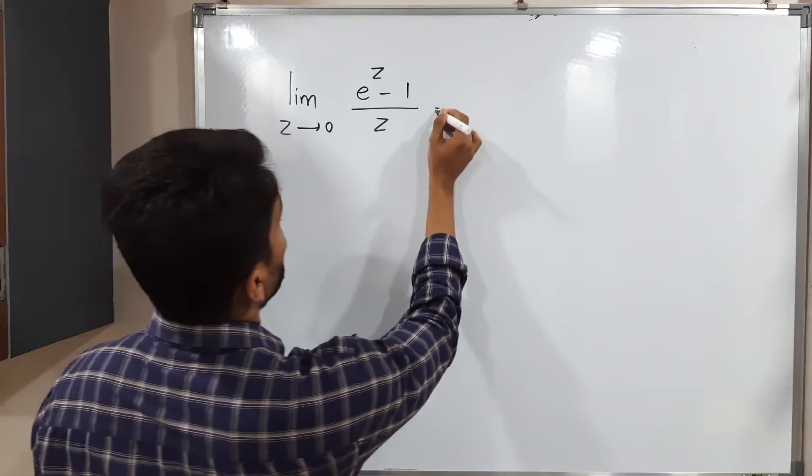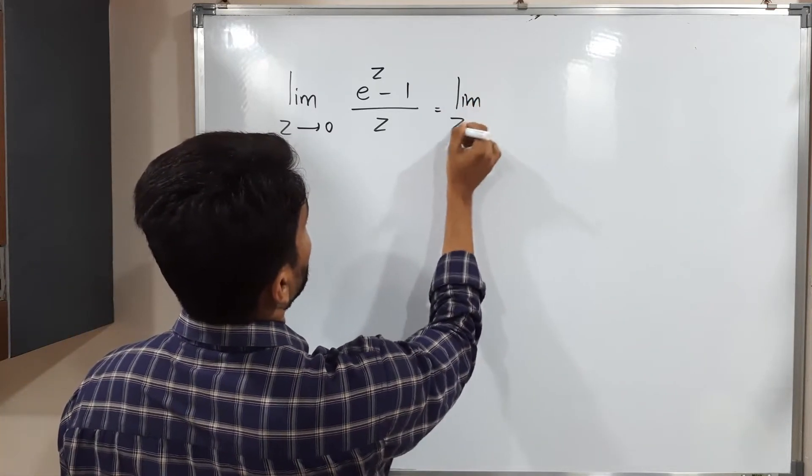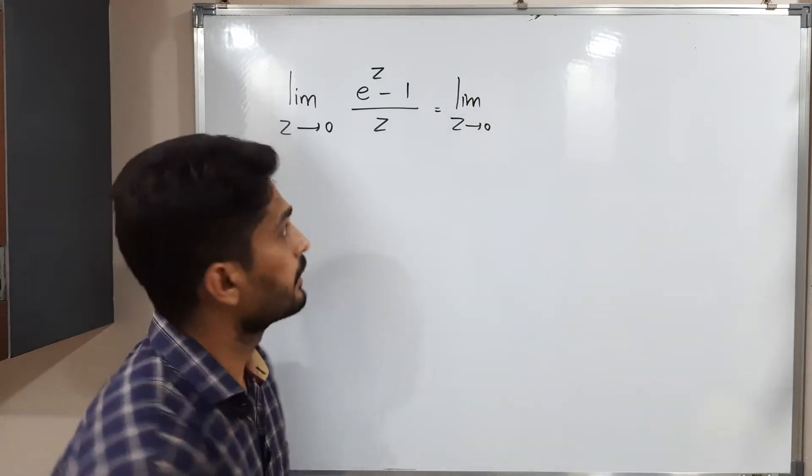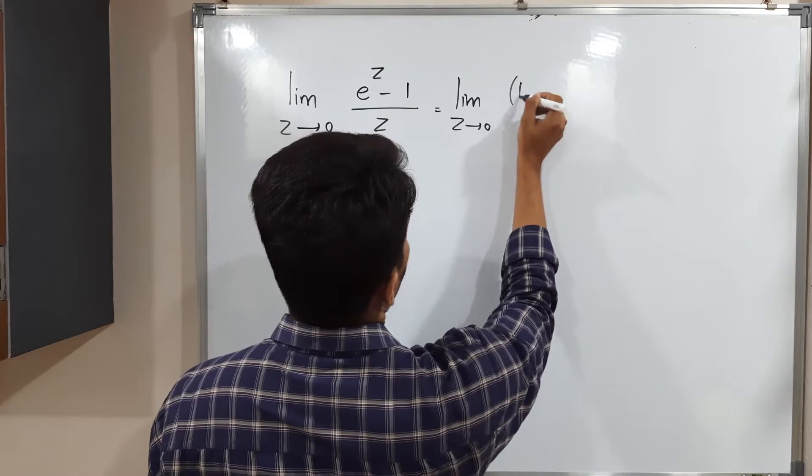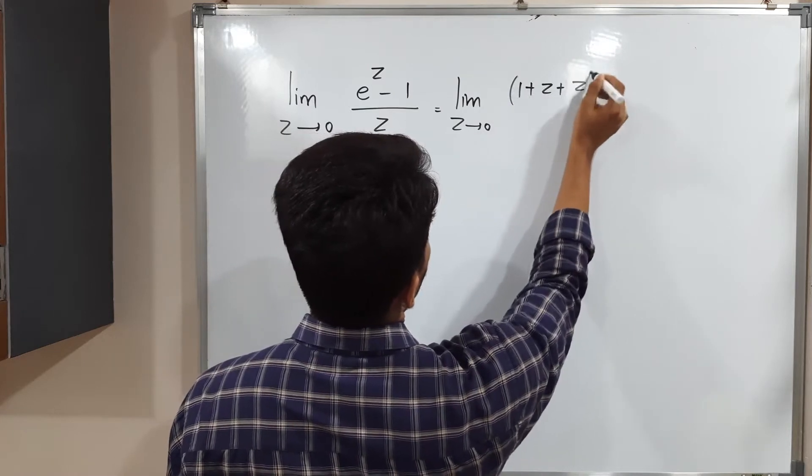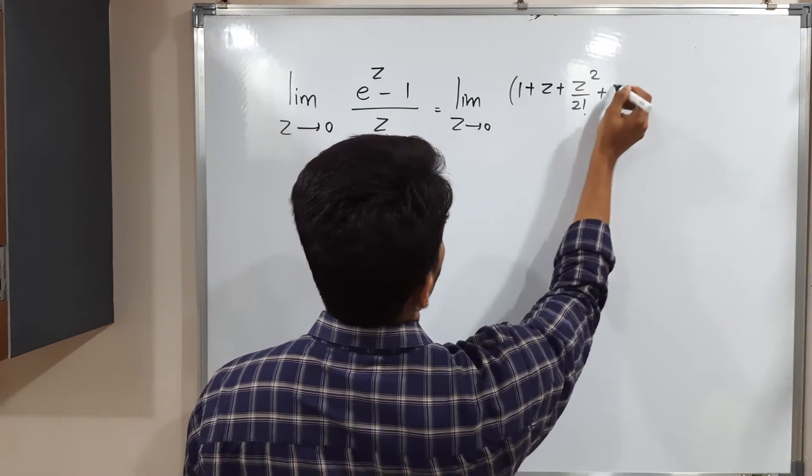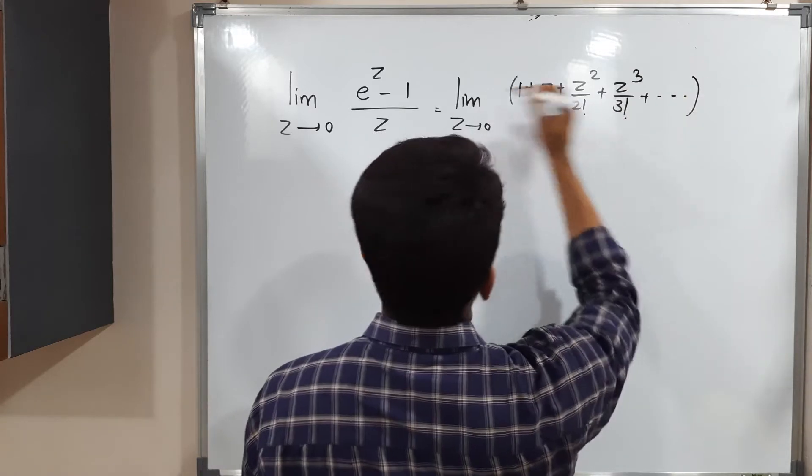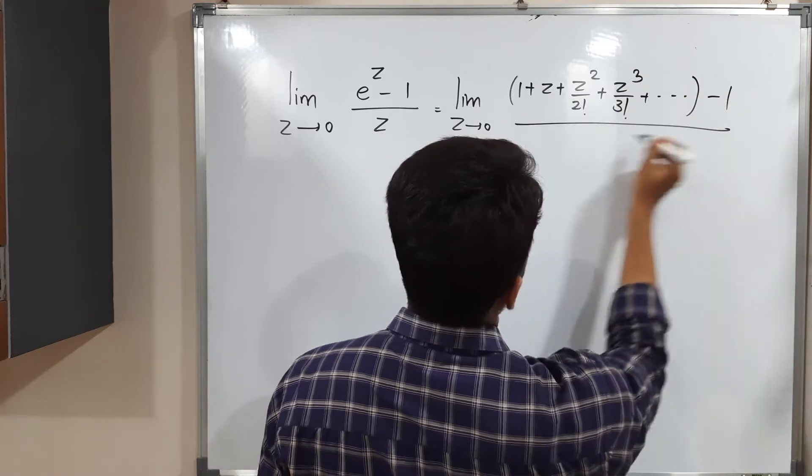So we have to find its value. Limit z tends to zero. I am going to use the series of e raised to z. I hope you are familiar with this: 1 plus z plus z square by 2 factorial plus z cube by 3 factorial plus and so on minus 1 divided by z.